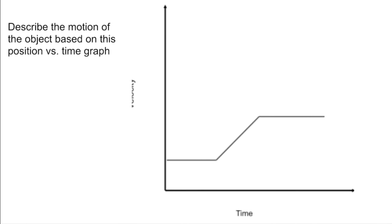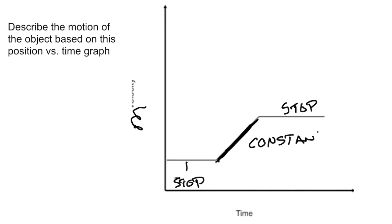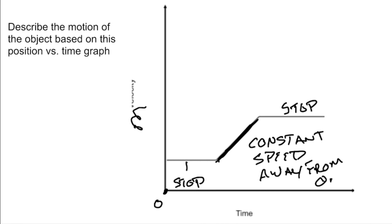Here we see two horizontal lines, and we know horizontal lines mean it's not moving — it's stopped. Then in the middle we have a straight diagonal line, so that's a constant speed going away from the origin, because the position is getting further from zero as time goes on.